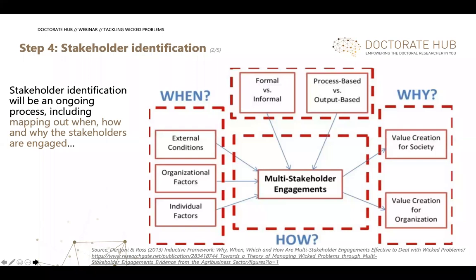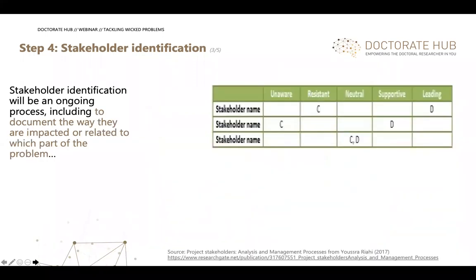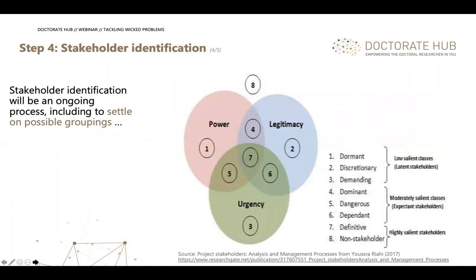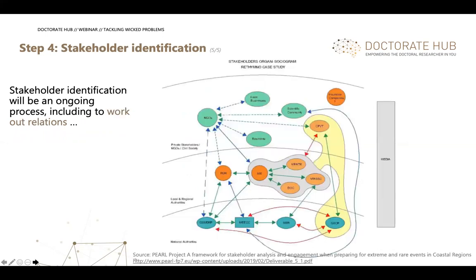It is important to map out the stakeholder engagement plan before taking any actions. Once you engage stakeholders, document how they are impacted by the problem or part of the problem. That documentation enables you to identify commonalities, themes, and groupings, and ultimately to outline how the interactions and different parts of the problems relate to each other. This diagram was taken from an EU project — it is highly recommended to look into their stakeholder analysis and engagement reports for a neat overview of how they worked.